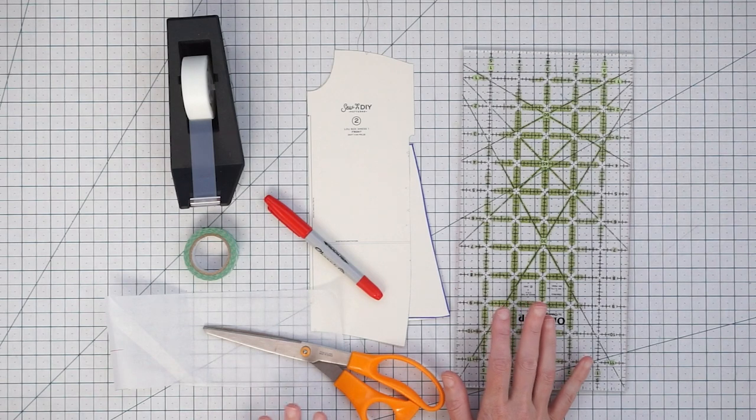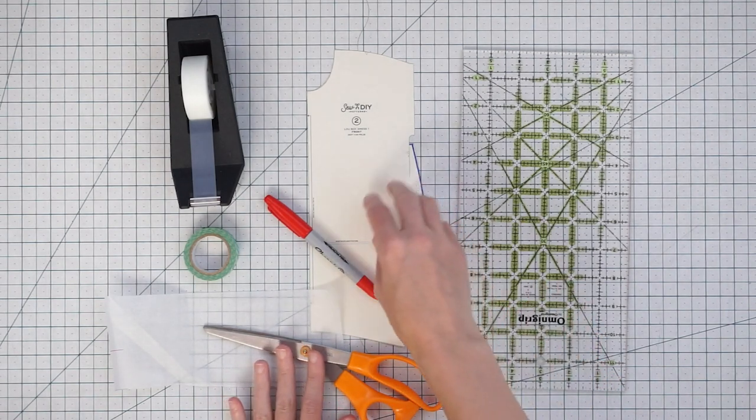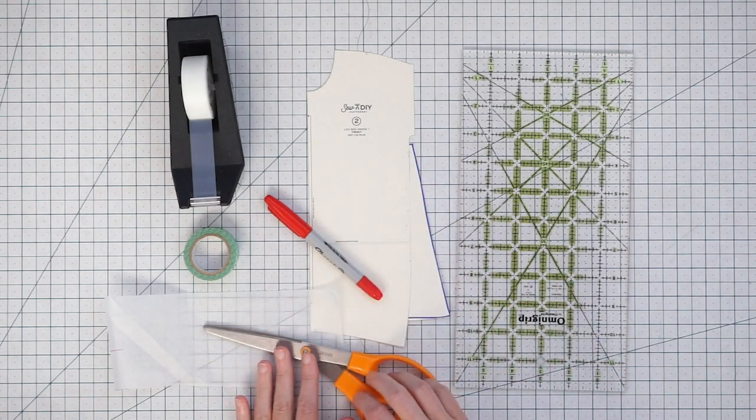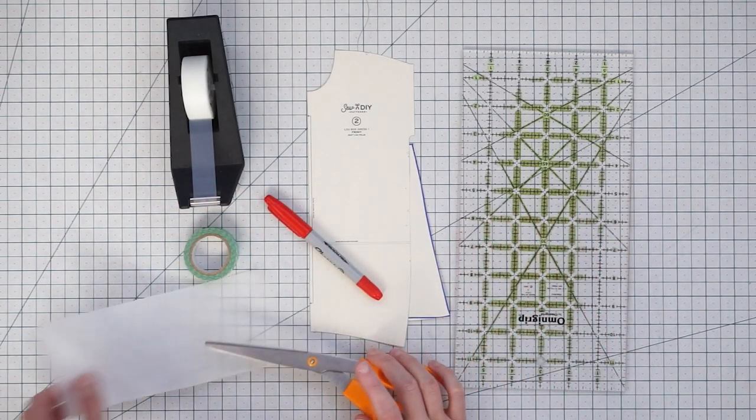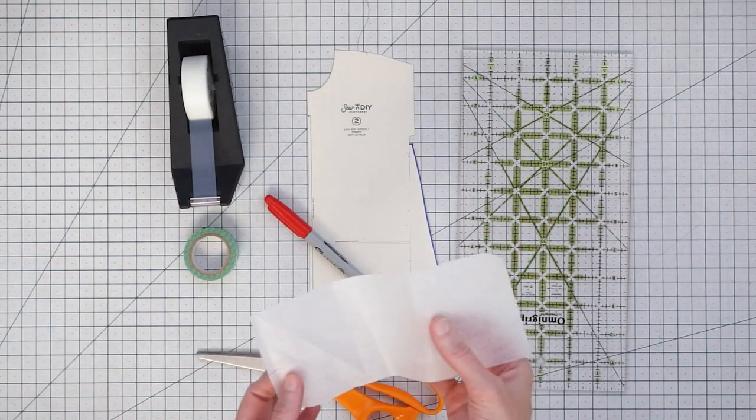To lengthen or shorten a dress or skirt, you're going to need your pattern, a pen, some scissors, tape, a ruler, and if you're lengthening, you'll need a little bit of extra paper.